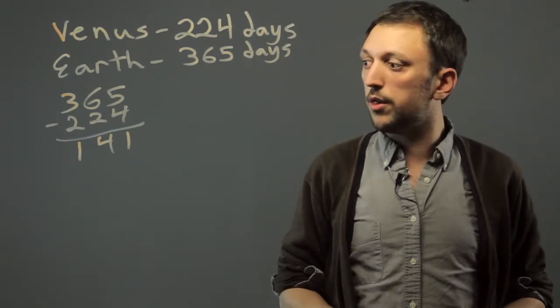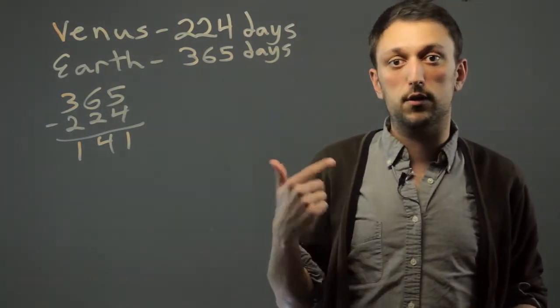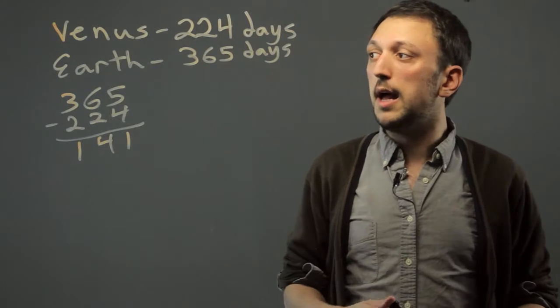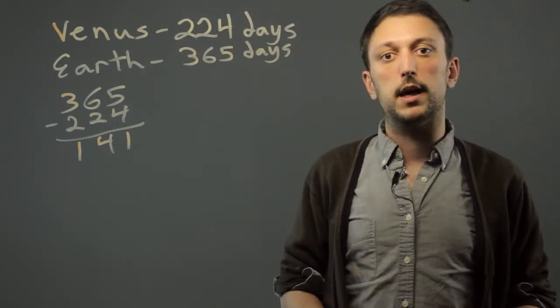So a year on Earth is 141 days longer than a year on Venus. And that's a second grade math idea for space. Thanks a lot.